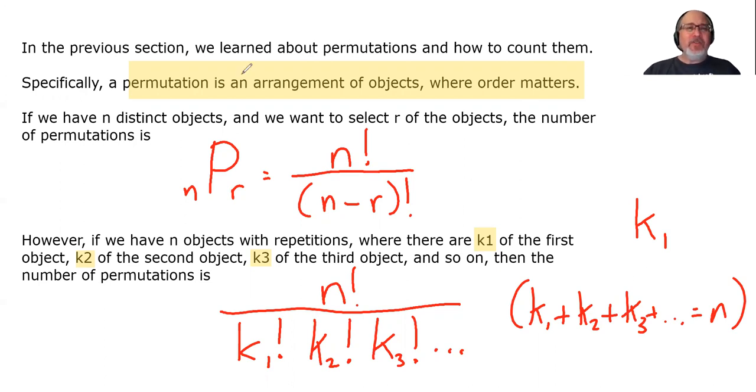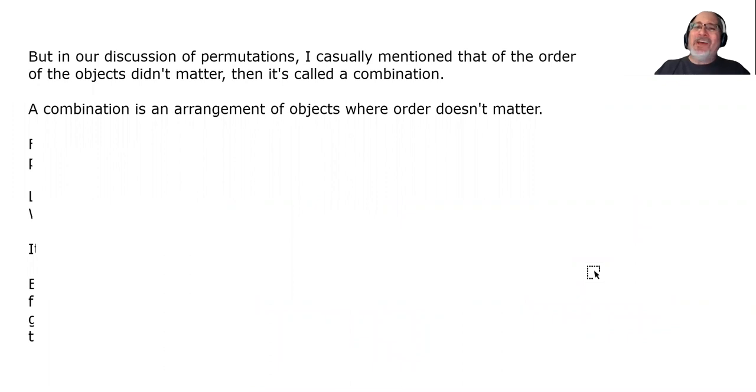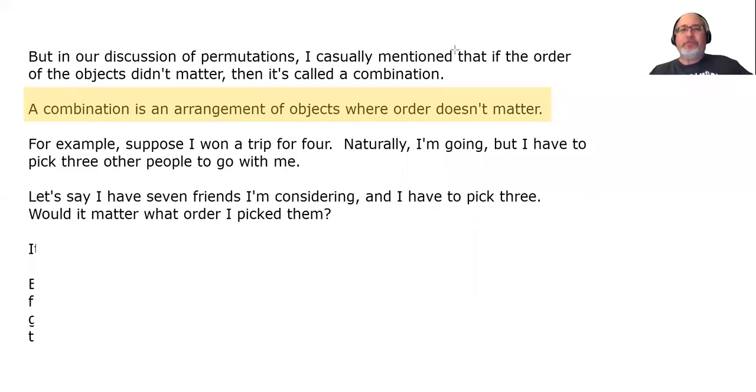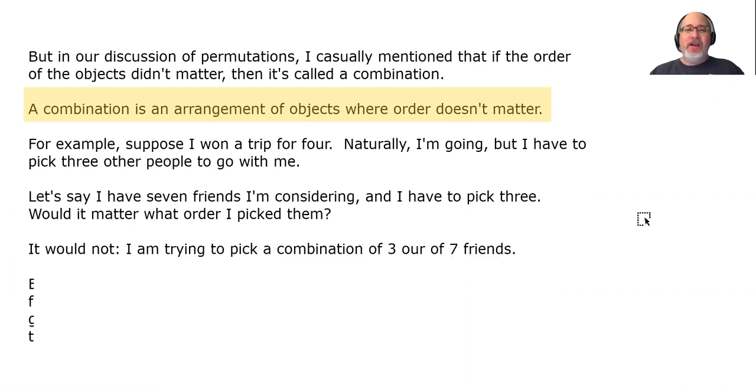In our discussion of permutations, I casually mentioned that if the order of the objects didn't matter, then it's called a combination. So let's formally define a combination as an arrangement of objects where order does not matter. For example, suppose I want a trip for four. Naturally I'm going, but I have to pick three other people to go with me. Let's say I have seven friends I'm considering, and I have to pick three. Would it matter what order I picked them? Nope, it wouldn't. I'm trying to pick a combination of three out of seven friends.